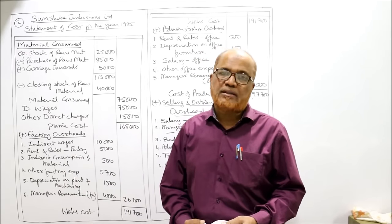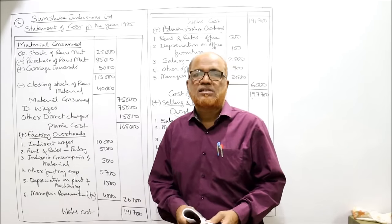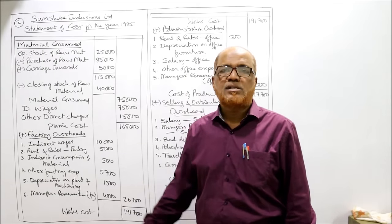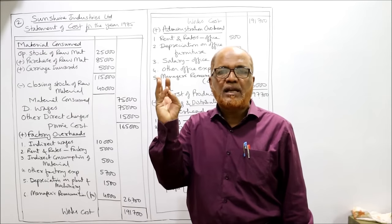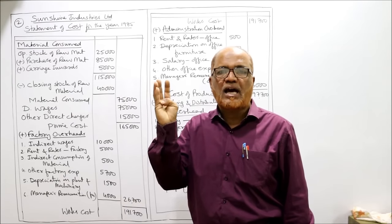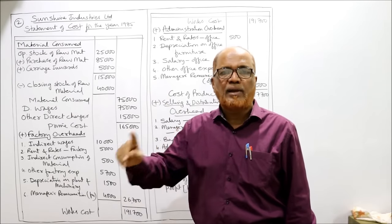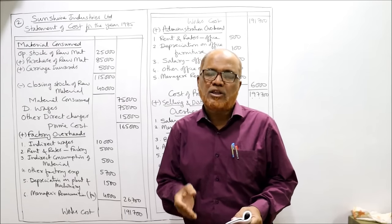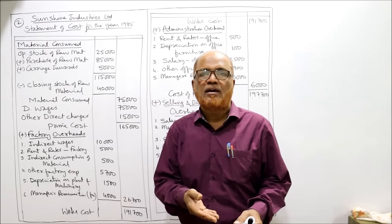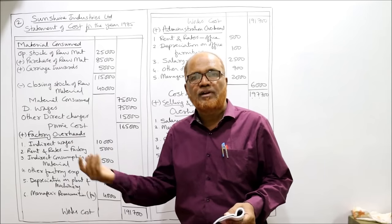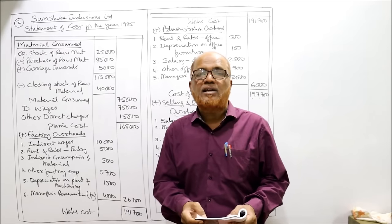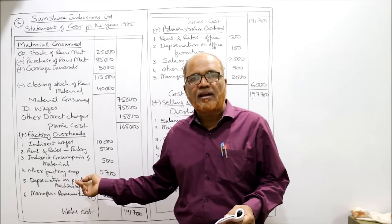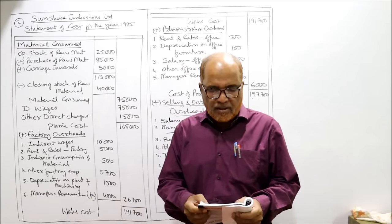Other direct charges means direct expenses, so it's part of prime cost — material consumed, direct wages, and other direct charges form prime cost. Rent and rates factory — specified in the problem — goes under factory overhead. Rent and rates office — goes under administration overhead. Indirect consumption of material: direct consumption goes under material consumed, but indirect consumption of material goes under factory overhead.